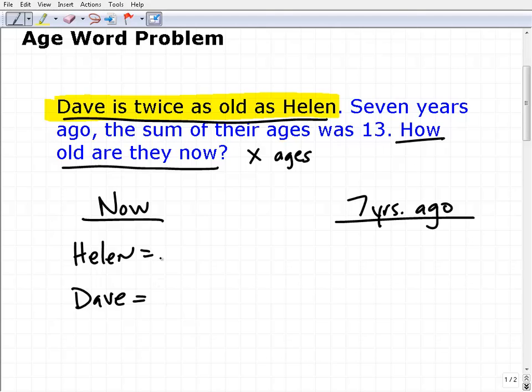Let me give you a hint. Which one, Helen or Dave, should be the variable X? If you think about this, Dave is twice as old—he's going to be double the age of Helen. So if Helen is X, Dave can be 2X. You could put Dave as X and Helen as one half X, but that's a little awkward. So Helen is X years old. Dave is twice as old as Helen, so he would be 2X years old.